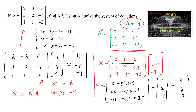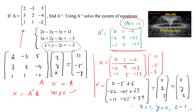The variable matrix X = [x; y; z] equals [1; 2; 3]. Comparing both sides, we conclude x = 1, y = 2, and z = 3. We can verify using the third equation: 1 + 2 - 2(3) = 1 + 2 - 6 = -3, which is satisfied. Therefore, the solution is x = 1, y = 2, z = 3.